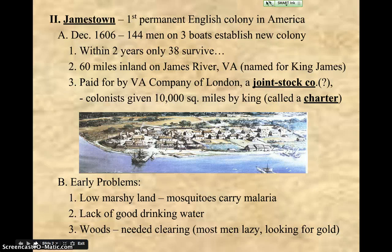The group that sends these men there is the Virginia Company of London — a joint stock company where people buy into a company and owners have stock. The colonists were given 10,000 square miles by the king, called a charter. And there is an aerial view of what Jamestown would have looked like.